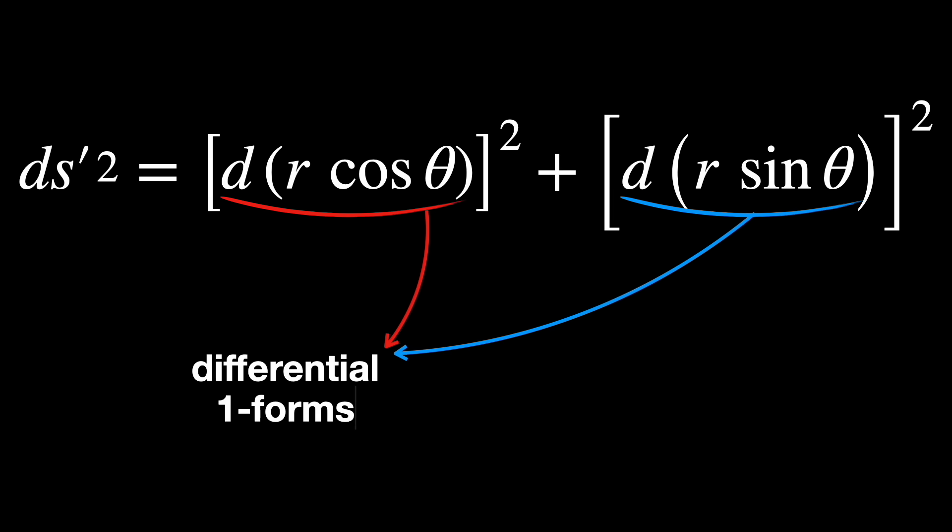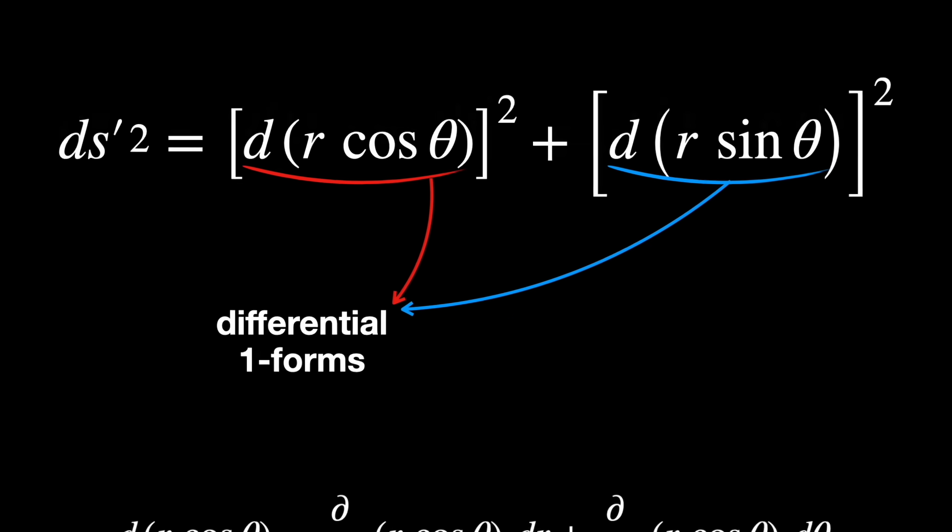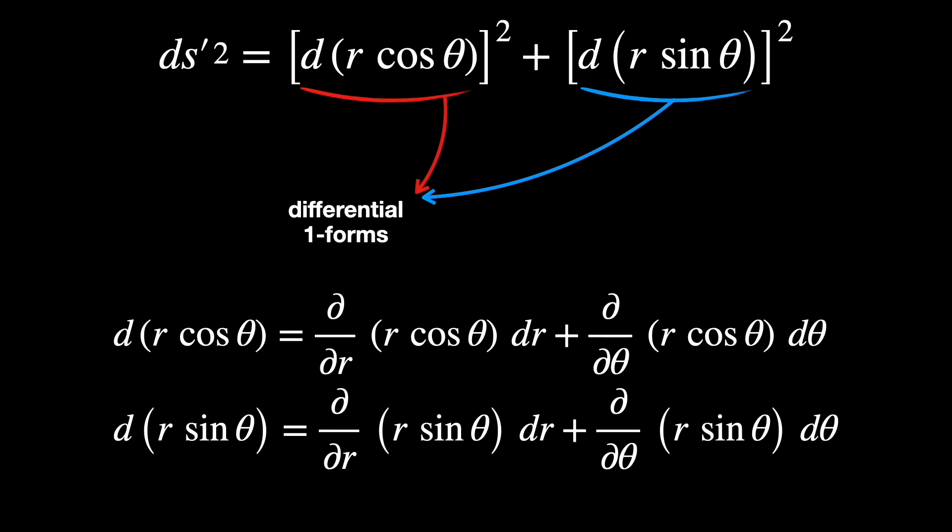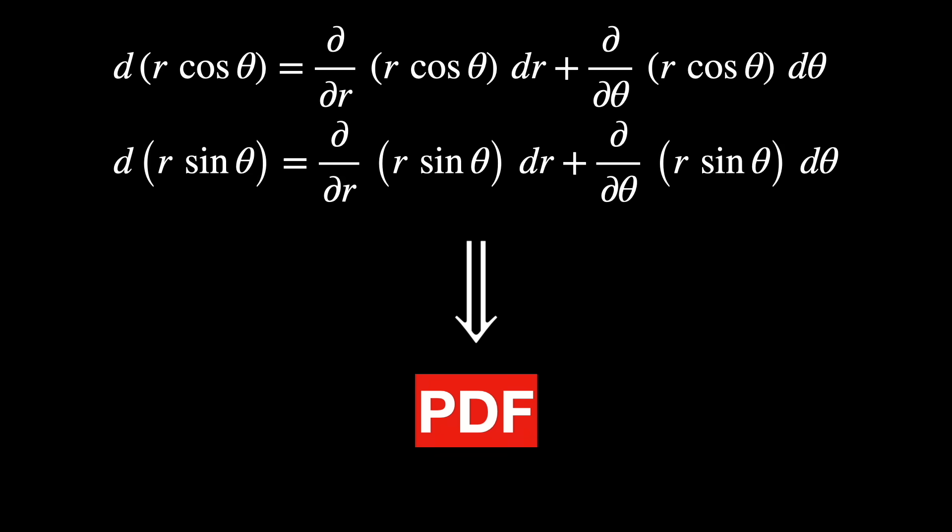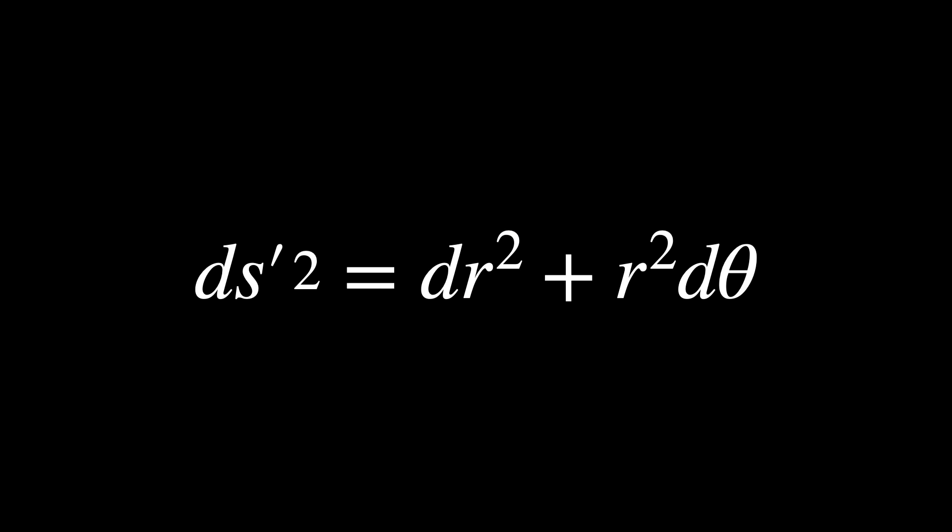Sofia will tell you about it. Well, these are differential one-forms, and they can be expressed in the new local polar coordinates using the chain rule of multivariable calculus. After working on all the derivatives and simplifications, we find that the same metric written in polar coordinates is this.